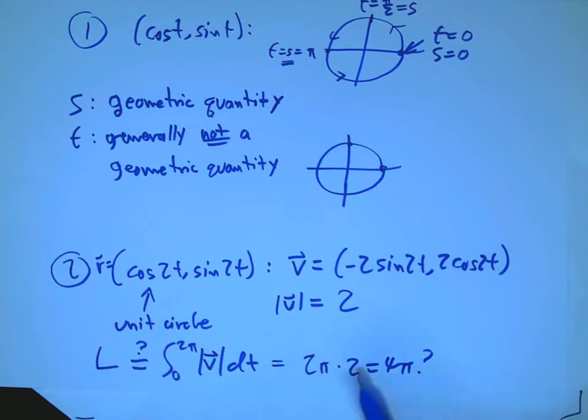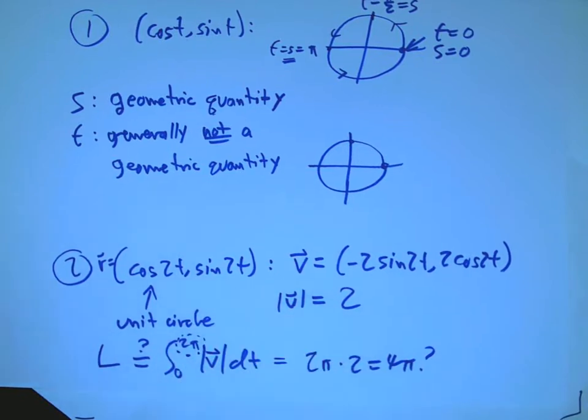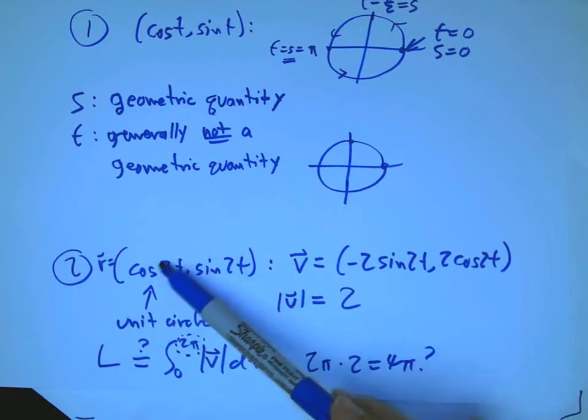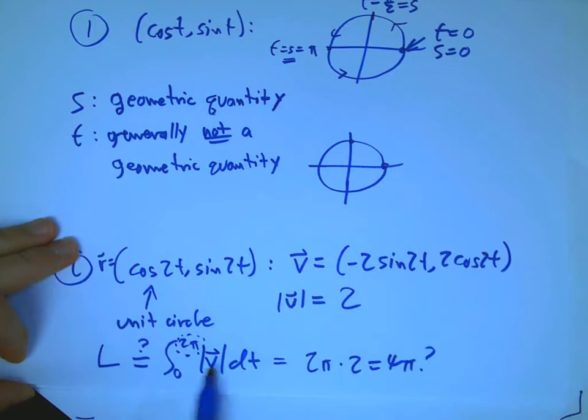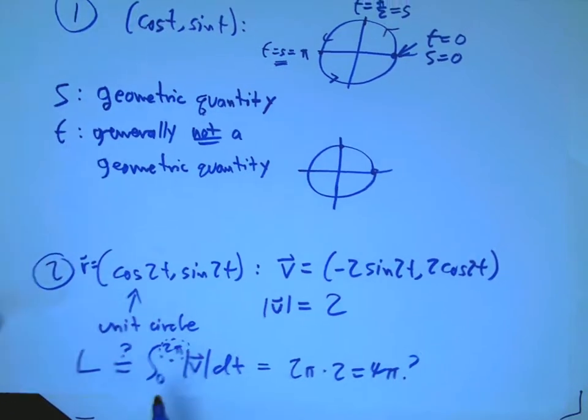Well, that would be 2 pi times that constant, which is 2. 4 pi, whoa, wait. That's not the circumference of the unit circle. Well, what's going wrong there is this guy. If I let this function run from 0 to 2 pi, 2t is going to run to 4 pi. That would go twice around the unit circle.